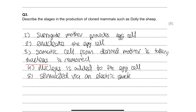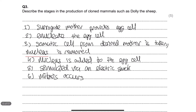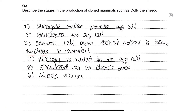After placing the nucleus into the surrogate mother's egg cell and applying the electric shock, mitosis begins. Through mitosis an embryo is formed. This embryo will be implanted into the uterus of the surrogate mother. The surrogate mother is the environment in which this new nucleus develops. Since mitosis creates no variation, the resulting organism is a genetic clone.